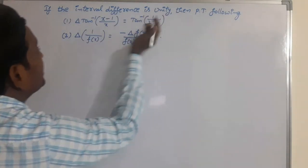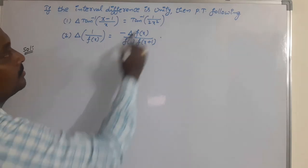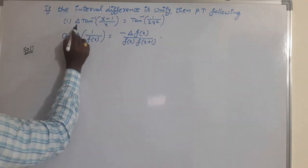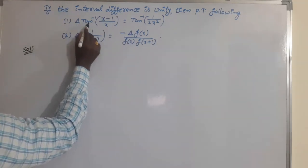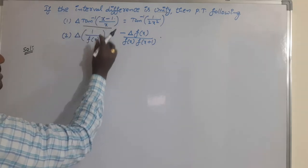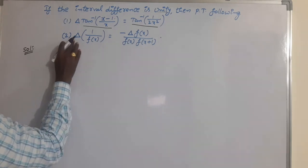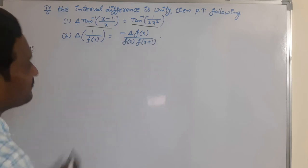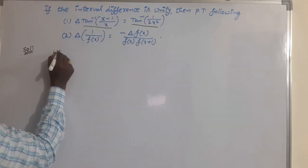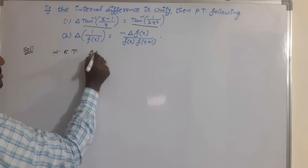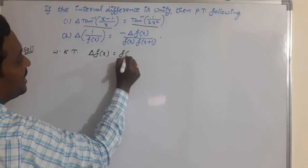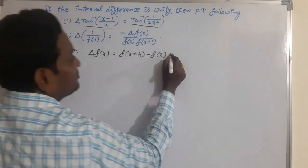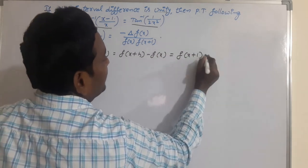If the interval difference is unity — interval difference is h, which is provided as unity, meaning 1 — then we have to prove the following results. From the definition of first order forward difference, it is f(x+h) minus f(x). But since h is 1, we replace it with f(x+1) minus f(x). Take this as equation number 1.